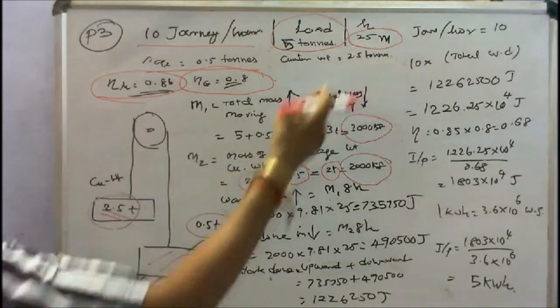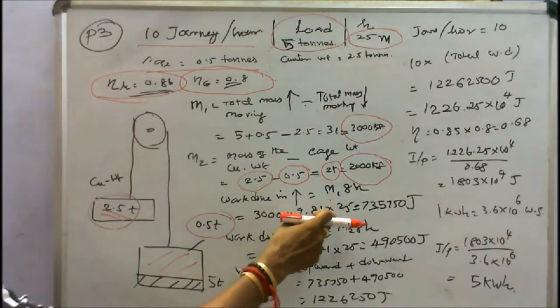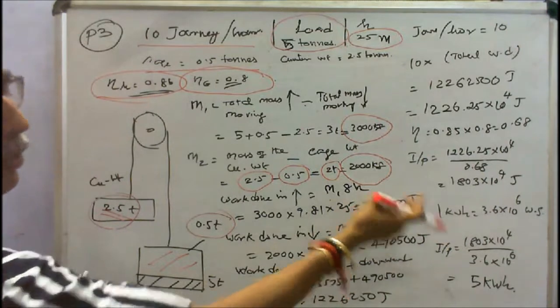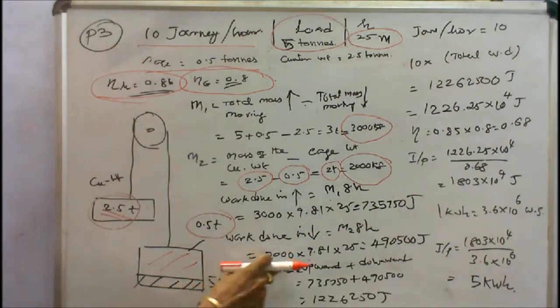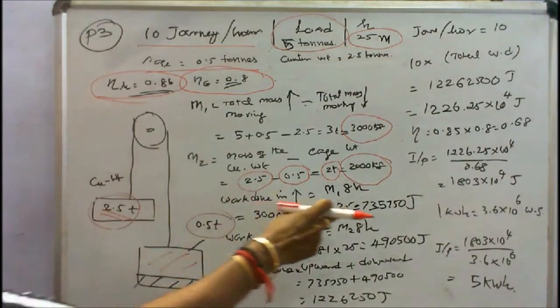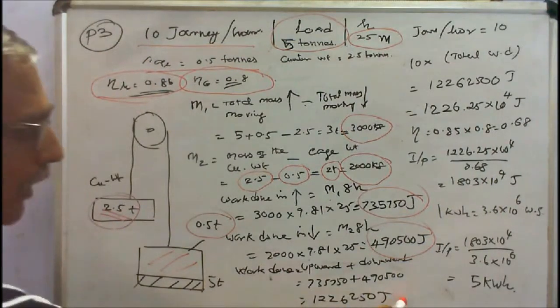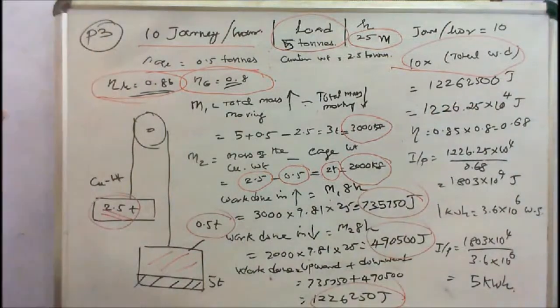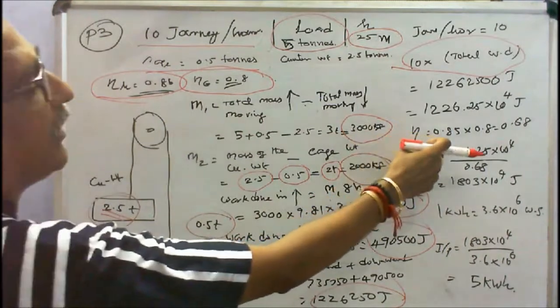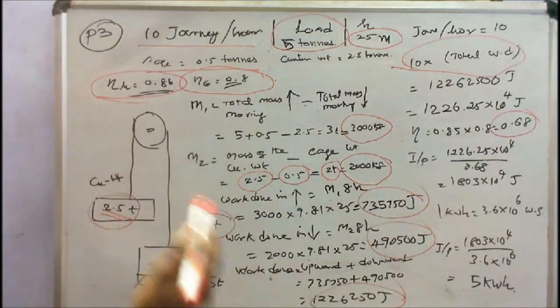Now we know the mass and height, we can find the work done. Work done equals M1 times g times h: 3000 times 9.8 times 25 equals 735000 joules. Similarly for M2: 2000 times 9.8 times 25 equals 490500 joules. So the total work done equals this value plus this value, for 10 journeys per hour, so multiply by 10. We will get 1226.25 × 10⁴ joules. The overall efficiency - efficiency of hoist 0.85, efficiency of motor 0.8, therefore overall efficiency equals 0.68.